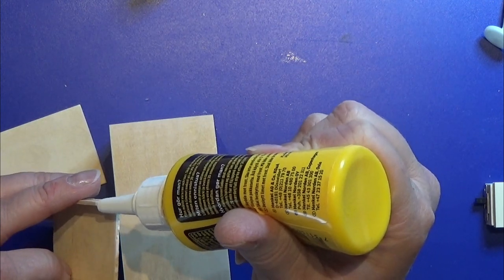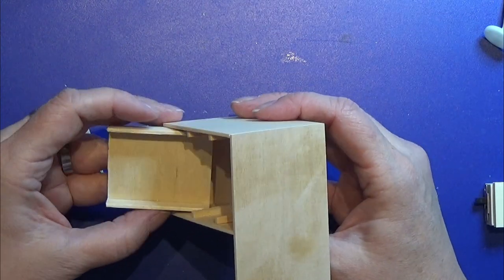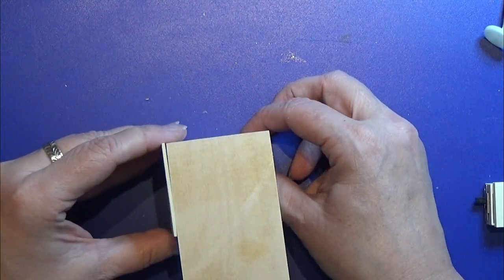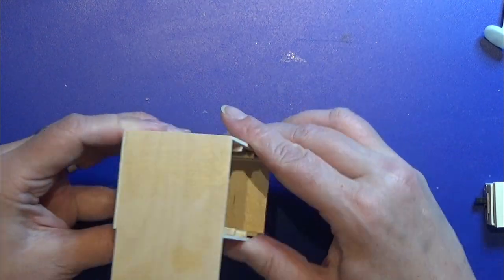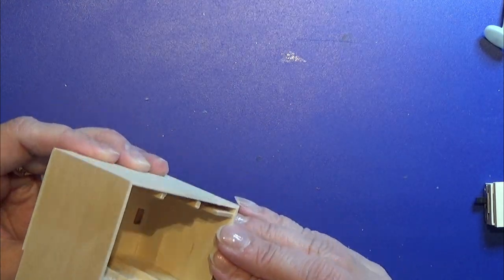Then I glued the drawer with no end part onto this front plate for the drawers that I still didn't cut into three pieces yet. I made sure that the glue was all hardened before I continued working on this piece.